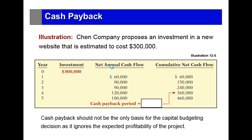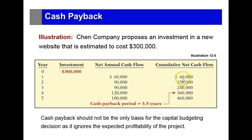Chen Company proposes an investment in a new website estimated to cost $300,000. Cash payback should not be the only basis for a capital budgeting decision since it ignores profitability. Looking at the various cash flows, we can see when the payback is going to happen — roughly in year three and a half.